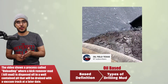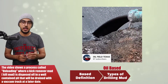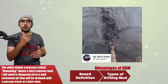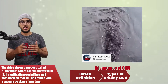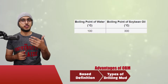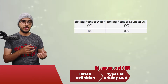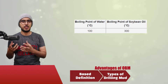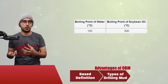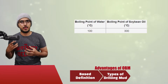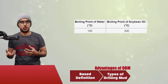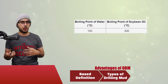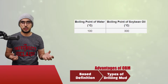Oil-based muds have a number of advantages over water-based muds. One of the most obvious is that it has a higher thermal stability than water. Water, in its natural form, would vaporize at a lower temperature compared to oil.